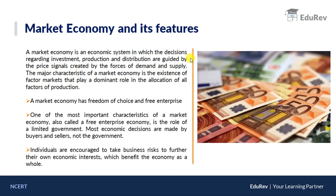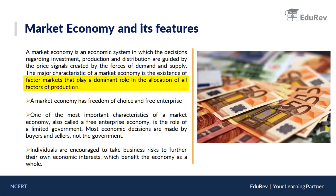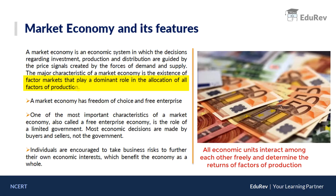The major characteristic of a market economy is the existence of factor markets that play a dominant role in the allocation of all factors of production — land, labor, capital, and entrepreneur. All the factors of production have a free role to play. They interact among each other and the profits, rents, and wages earned by them are decided in the market economy itself.